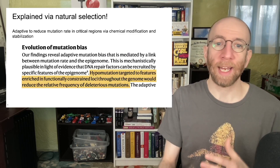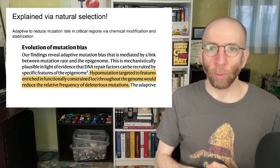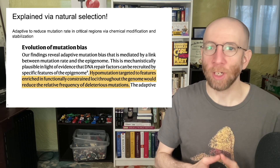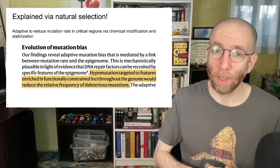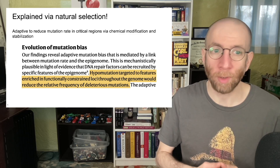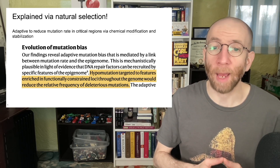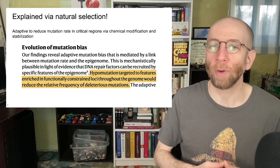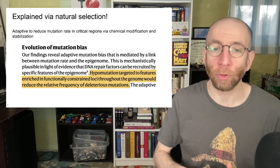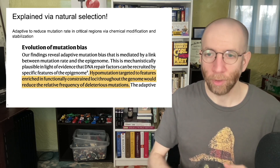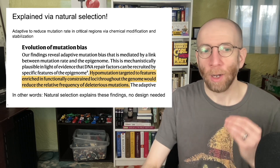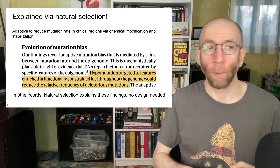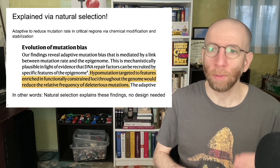The authors described it like this: 'Our findings reveal adaptive mutation bias that is mediated by a link between mutation rate and the epigenome. This is mechanistically plausible in light of evidence that DNA repair factors can be recruited by specific features of the epigenome. Hypomutation targeted to features enriched in functionally constrained loci throughout the genome would reduce the relative frequency of deleterious mutations.' In other words, natural selection explains these findings. No design or programmed mutations or deterministic mutations needed.